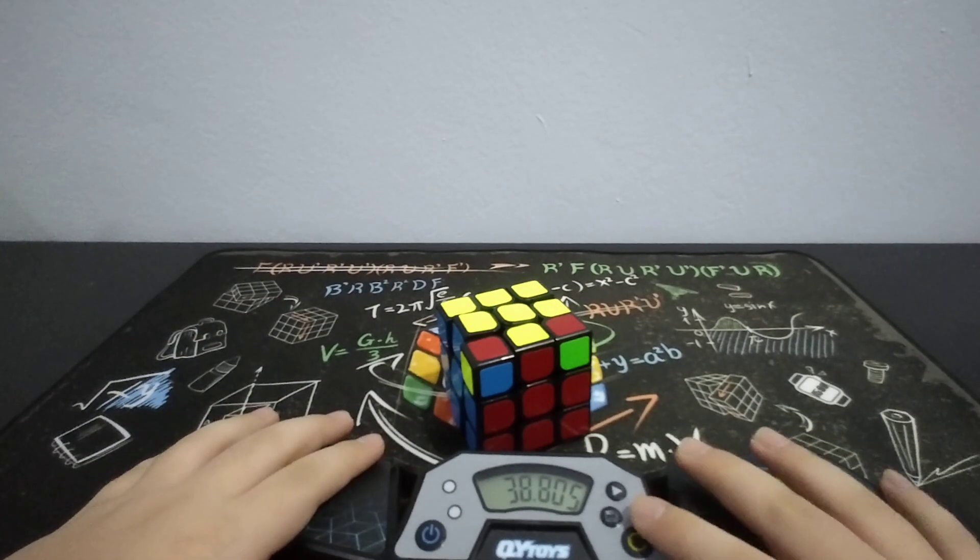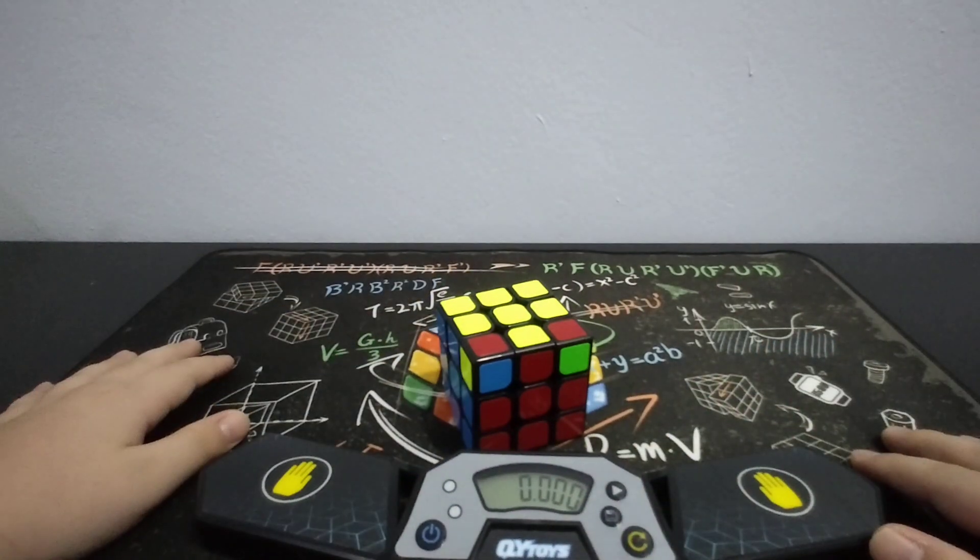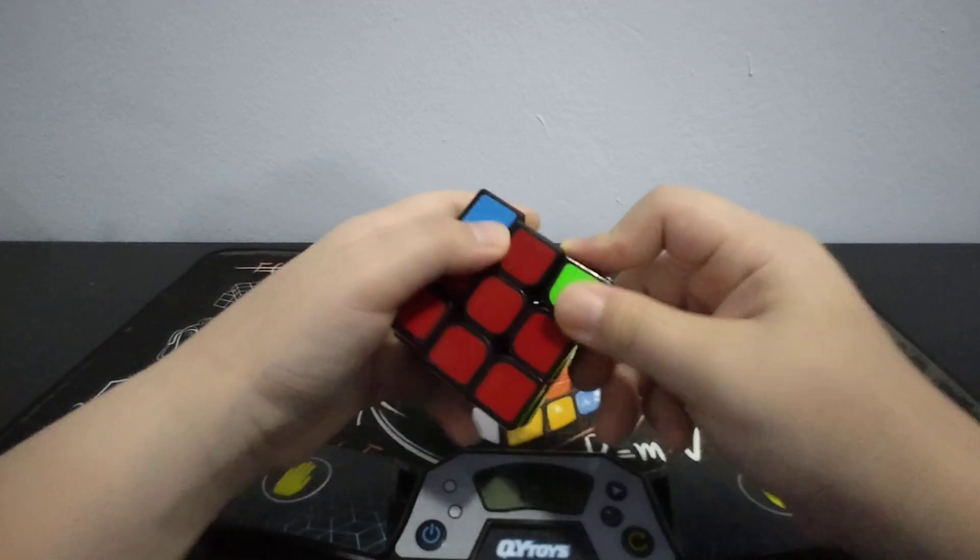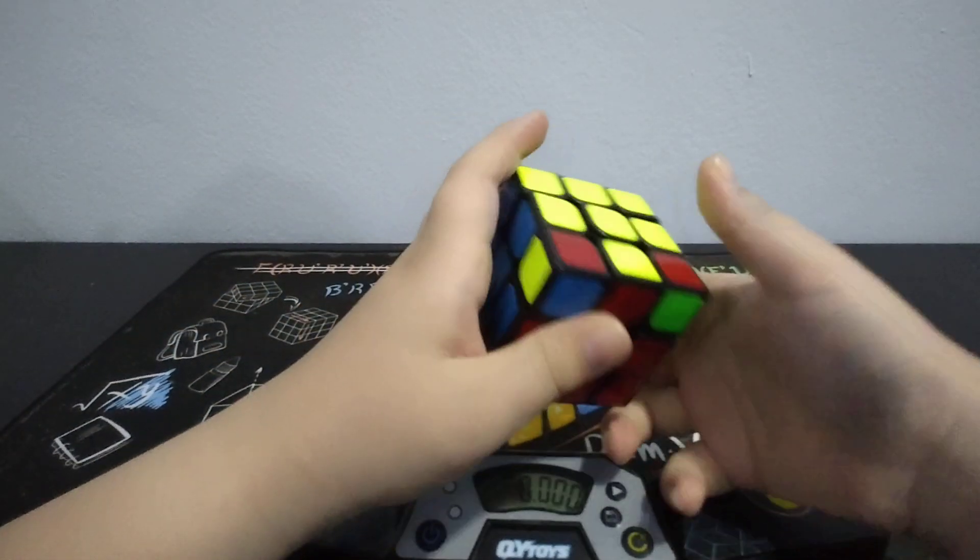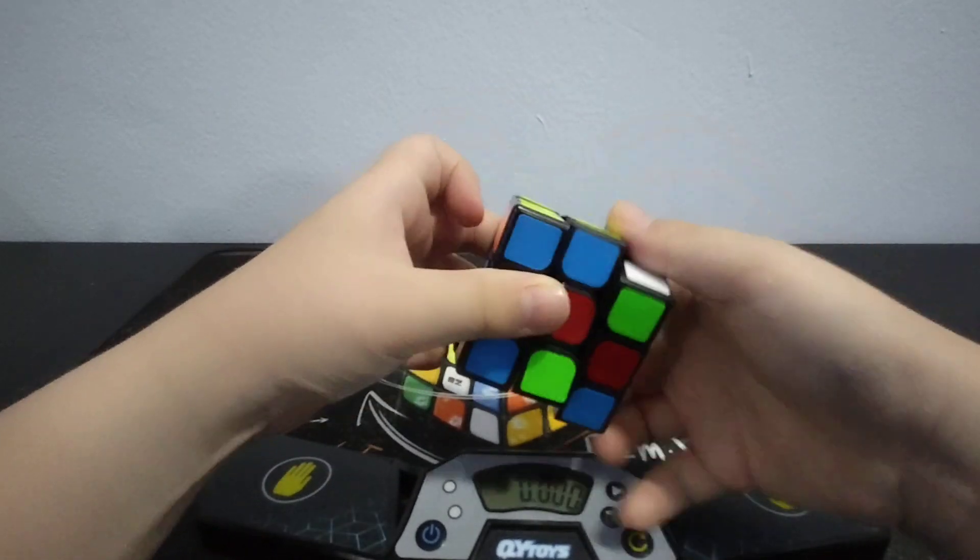That's a DNF. Let's see if the corner can twist. The corner can twist, but it's not very easy to twist.